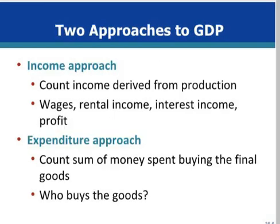GDP can be viewed from two different perspectives. The income approach looks at GDP in terms of the income derived, or created, from producing goods and services. The expenditures approach measures GDP as the sum of all the money spent in buying the output. In theory, either method should yield equal results. The expenditures and income approaches are two different ways to look at the same thing — like looking at a quarter from the head side or the tail side, but it is still worth the same amount.